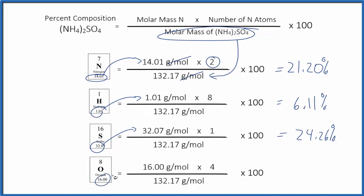So we have our molar mass here, and we have 4 oxygen atoms. We multiply, divide by the molar mass, and then to get a percent multiply by 100, 48.42%.